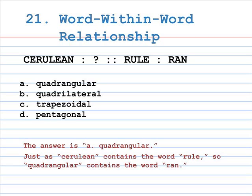Cerulean is to A. Quadrangular, B. Quadrilateral, C. Trapezoidal, D. Pentagonal, as rule is to RAN. The answer is A, Quadrangular. Just as cerulean — which means the color sky blue — contains the word 'rule', so quadrangular contains the word 'RAN'.